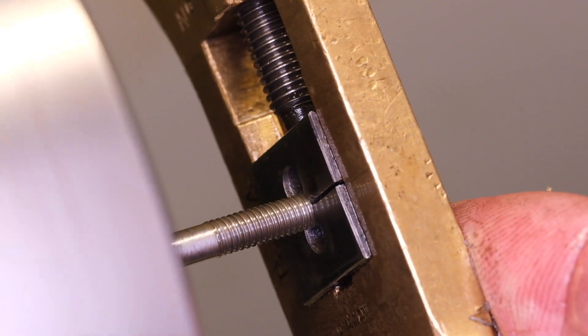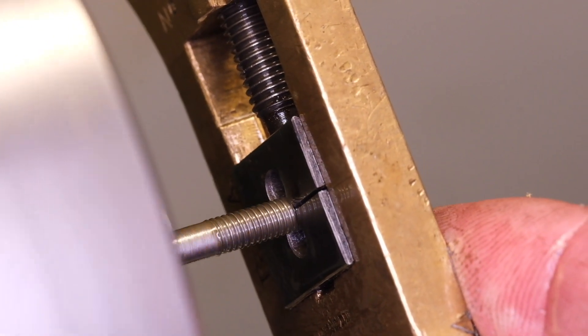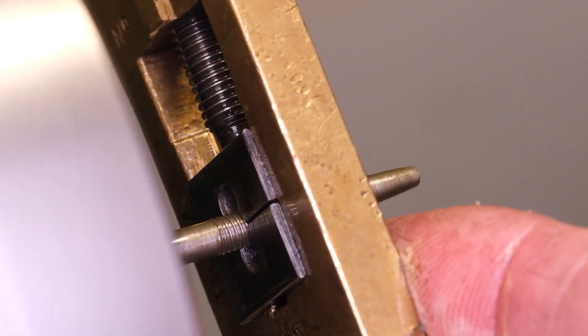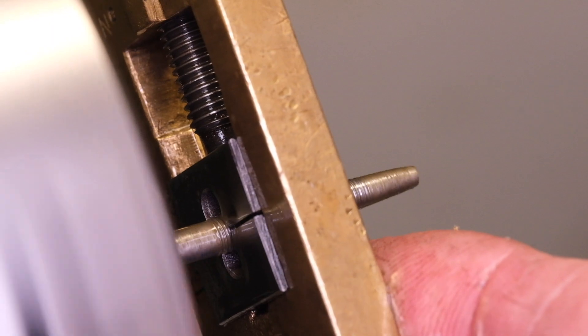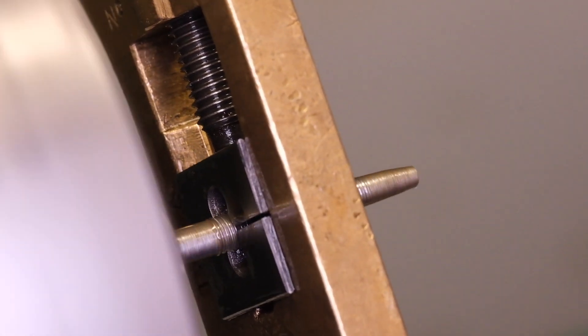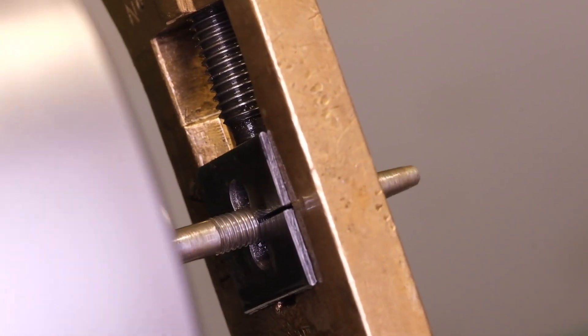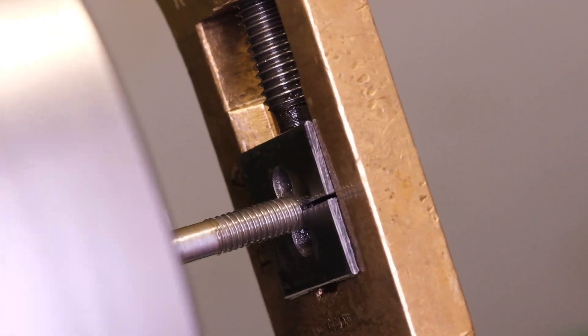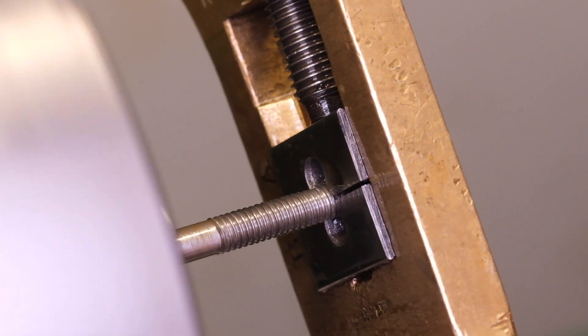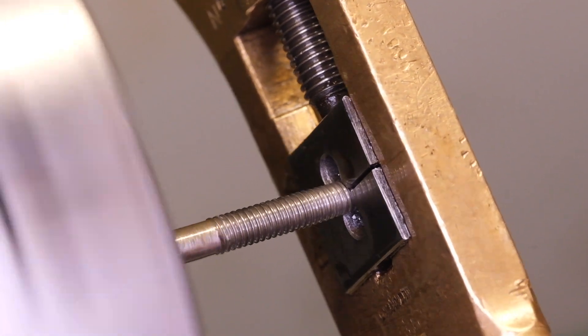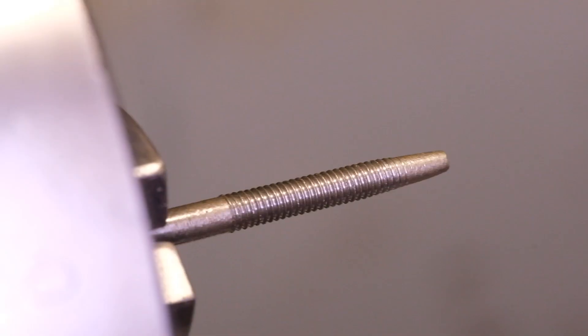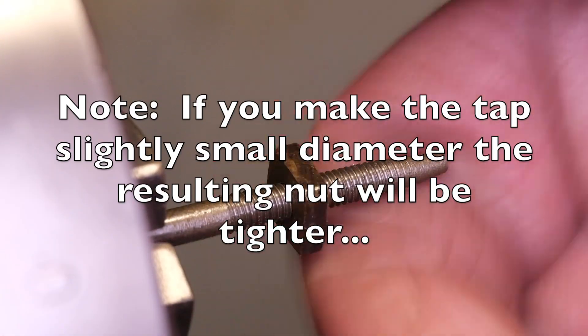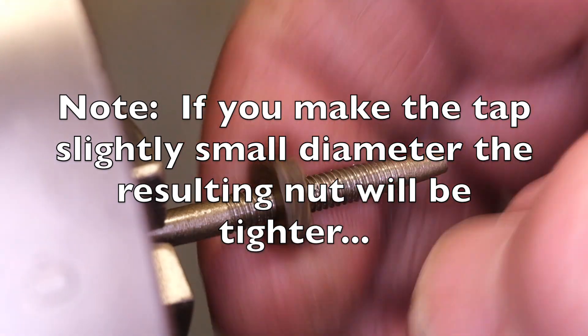Then I use my 4BA die to slowly reduce the diameter of this thread until one of the historic nuts that we've got fits well.